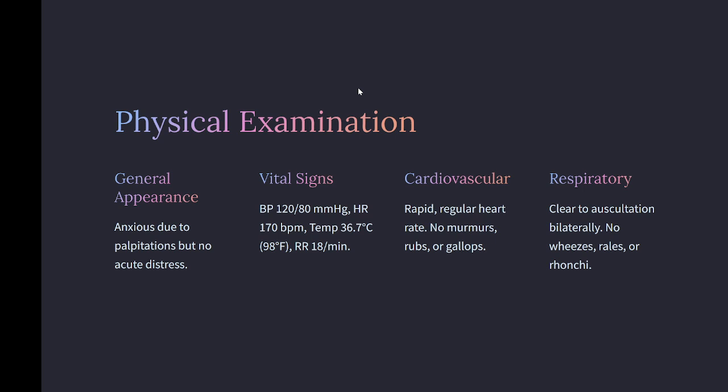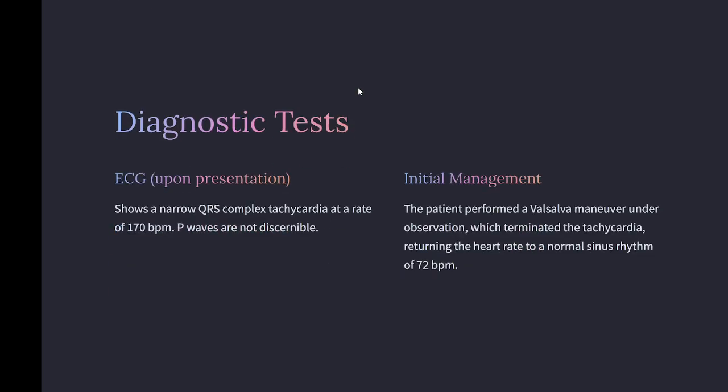Physical examination: general appearance anxious due to palpitations but no acute distress. Vital signs: BP 120/80 mmHg, HR 170 BPM, RR 18/min. Cardiovascular: rapid, regular heart rate; no murmurs, rubs, or gallops. Respiratory: clear to auscultation bilaterally. Neurological: alert and oriented, no focal deficits. ECG upon presentation shows a narrow QRS complex tachycardia at a rate of 170 BPM; P waves are not discernible.